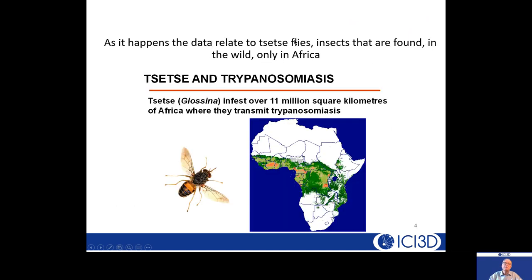As it happens, the data relate to tsetse flies — insects found in the wild only in Africa. They're an important insect, occurring over about 11 million square kilometers of Africa. They transmit a problem for human beings: human sleeping sickness, still a problem in parts of western and central Africa.